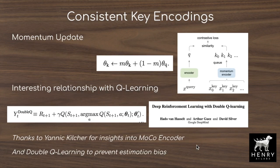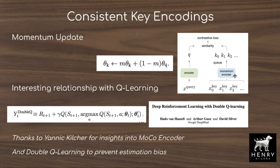There's an interesting connection between momentum-updated key encodings and double Q-learning. In Q-learning, you compute the TD error comparing experienced reward plus predicted future reward against the prior prediction. Comparing a network to itself can be unstable, so having a slowly progressing key encoder acts like a target network, preventing estimation bias instability — similar to how double Q-learning uses a separate target network.